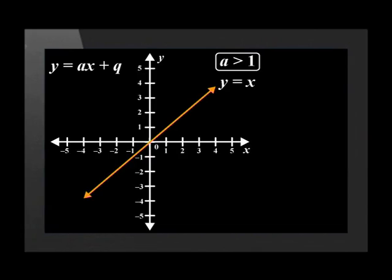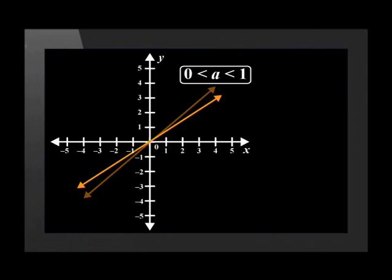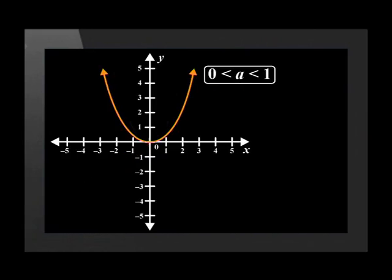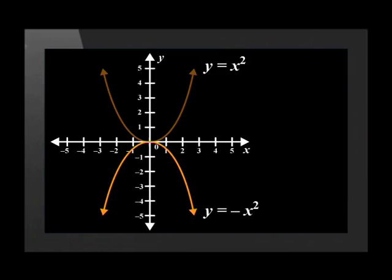When we increase the a value it causes the straight line to stretch vertically away from the x-axis by a factor of a, and it has the same effect on the parabola. Decreasing the a value has the opposite effect on these graphs. For an a value between 0 and 1, the parent graph of the straight line moves closer to the x-axis and the parabola also moves closer. Making the a value negative causes the parent graphs of the straight lines to reflect about the x-axis, and the parabola also reflects about the x-axis.